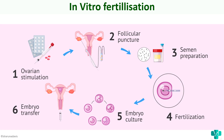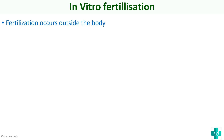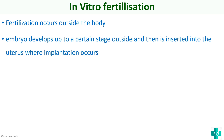Next, moving on to the very famous in vitro fertilization. Here again, the first step is ovarian stimulation — we make the ovum ready and then retrieve that ovum. Then we prepare the semen and fertilization occurs outside the body in the lab. The embryo is cultured, and once it reaches a sufficient cell stage, it is transferred into the endometrium where implantation occurs.